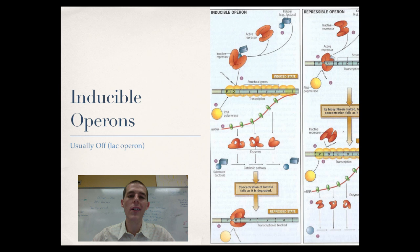The opposite of a repressible operon is an inducible operon, and an inducible operon is one that is usually off, but then when something needs to be made, the pathway is turned on so that that thing can be synthesized. The example we're going to use of this is the LAC operon, which produces the enzymes needed to break down the sugar lactose.